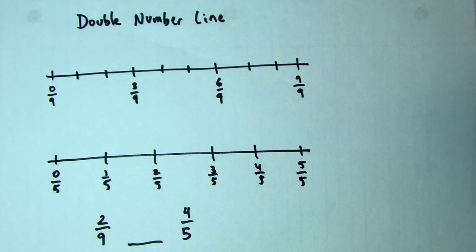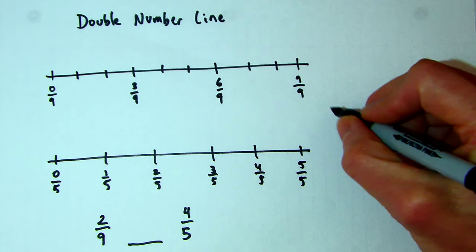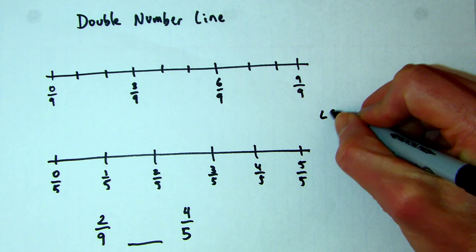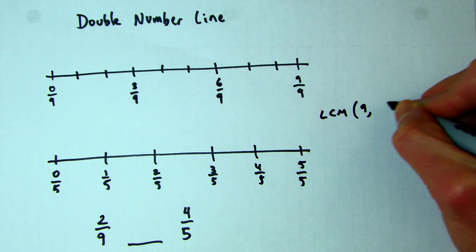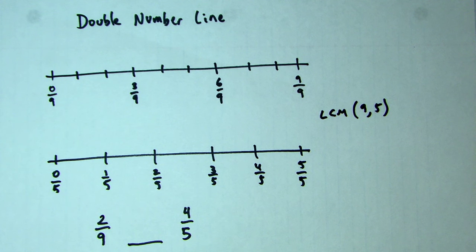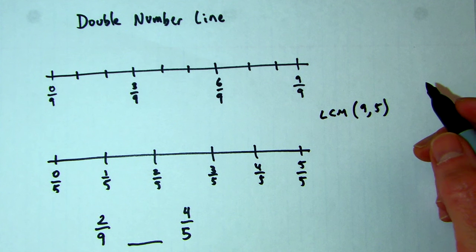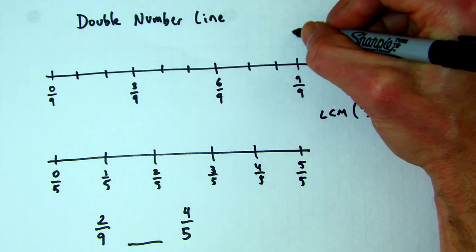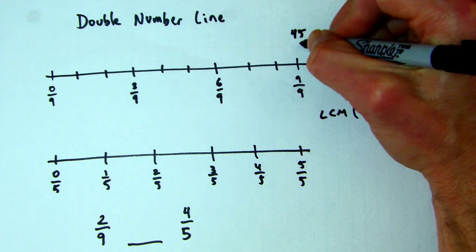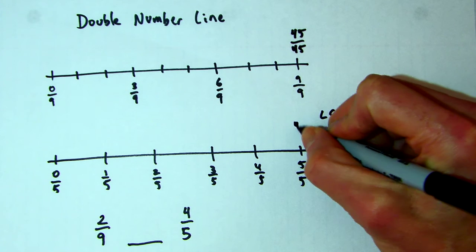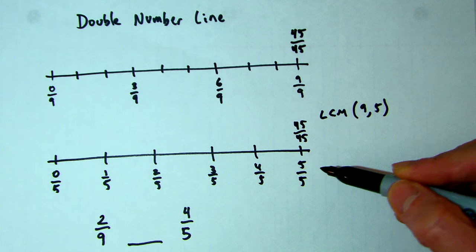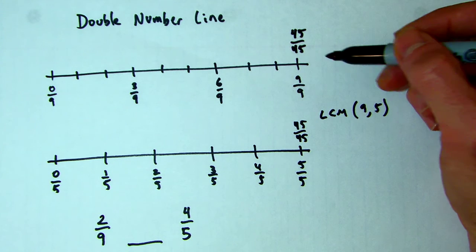So what I'm thinking about is, what is a common multiple, or the LCM of 9 and 5? What is the LCM of these two numbers? Where will they meet up? These numbers are relatively prime, so they're going to meet up at their product, which is 45. So I could make 45ths out of this number line. Now I'm not going to mark all the 45ths, but I'm going to show you that 45/45 is the same as 5/5 and the same as 9/9.